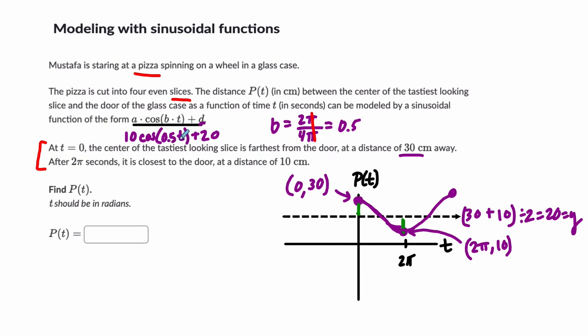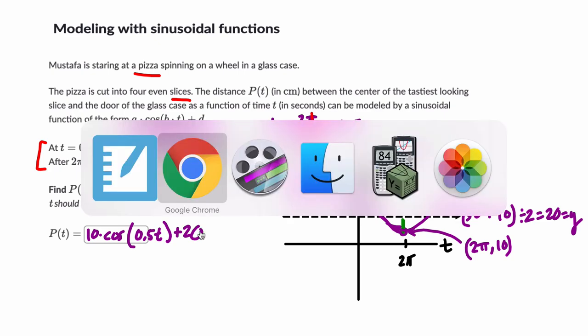Now watch your variable here. Make sure you write this as, this is a p of t. So 10 times the cosine of 0.5 t plus 20 will work here. But check it in Desmos. Let me just briefly go over how to do that with you.